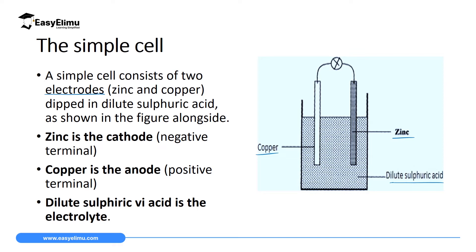In this simple cell, zinc metal is the cathode — the negative terminal of the cell. Copper is the anode — the positive terminal. Dilute sulfuric acid is the electrolyte. An electrolyte is a substance which gets decomposed, and when it gets decomposed it produces electrons which can flow and cause electrical energy or current.